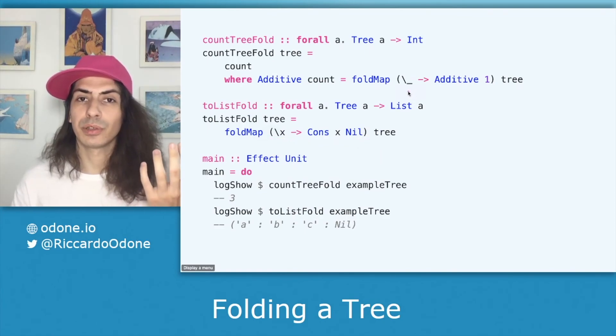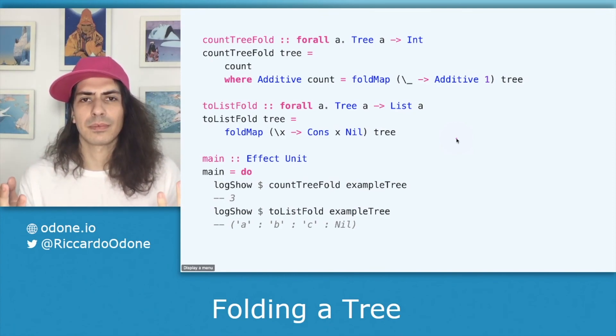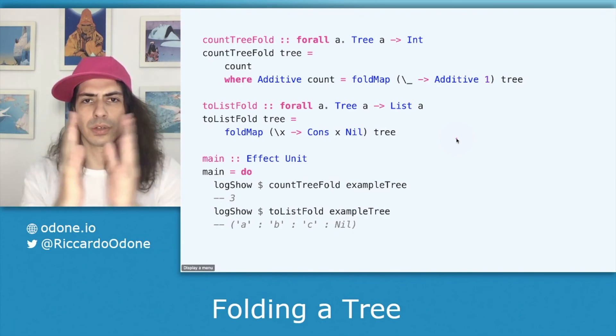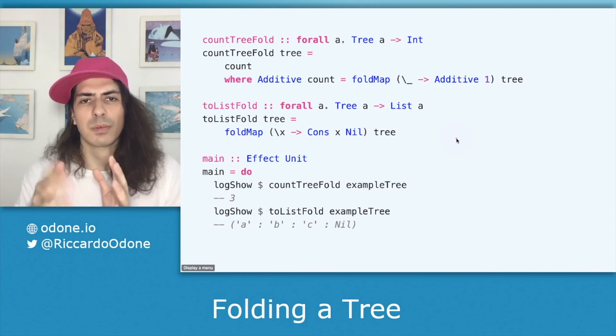In the case of counting the amount of leaves what we do is that we transform each leaf into additive of one. An additive is a monoid that when it's squashed together with another additive it just performs the sum of its value. In our case we're going to have all of the leaves being additive one and when they are squashed together they're going to be summing one plus one plus one as many times as the amount of leaves that we have.